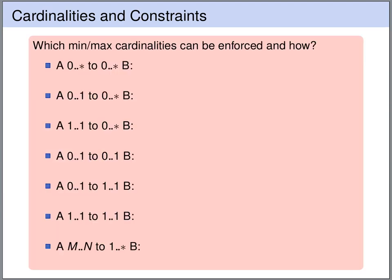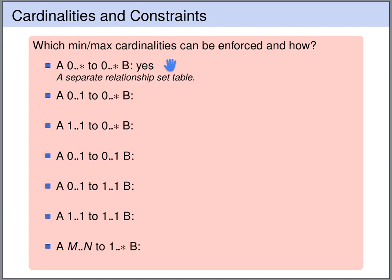Now let's have a look at how the cardinality constraints can be translated from entity relationship diagrams into the relational model. Our goal here is to enforce these cardinality constraints by the design of the database schema. First, we have a many-to-many relation: every A is related to an arbitrary number of B's, and every B is related to an arbitrary number of A's. This can be modeled in our database schema using the basic translation of a relationship set into a separate table, which can contain arbitrary connections between A and B.